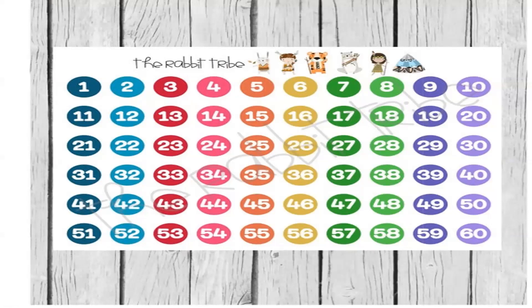Eight, nine, ten. Which number is this? Ten. After ten, the next number — well done! Now, all of you, loudly with me: 11, 12, 13, 14, 15, 16, 17, 18, 19, 20. Once again: 11, 12, 13, 14, 15, 16, 17, 18, 19, 20. After 20 the next number is 21.